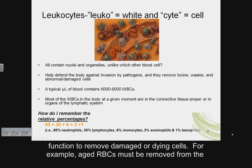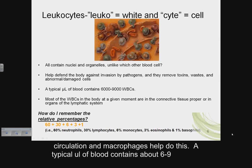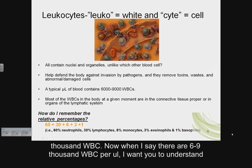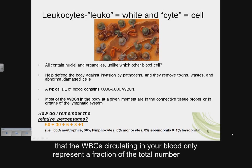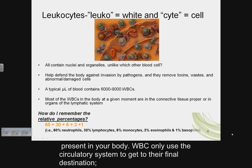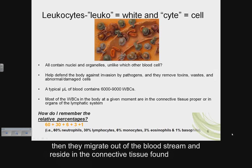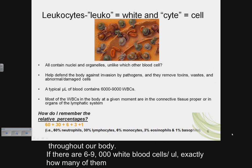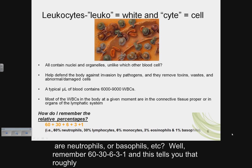Macrophages help do this. A typical microliter of blood contains about 6,000 to 9,000 white blood cells. The white blood cells circulating in your blood only represent a fraction of the total number present in your body — white blood cells only use the circulatory system to get to their final destination, then they migrate out of the bloodstream and reside in the connective tissue throughout your body.